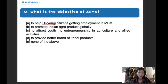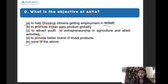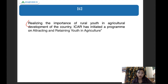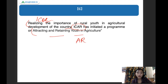What is the objective of ARIA? The right answer is option C: to attract youth to entrepreneurship in agriculture and allied activities. ARIA, which stands for Attracting and Retaining Youth in Agriculture, was initiated by ICAR — the Indian Council of Agricultural Research — which recognized the importance of rural youth in the agricultural development of the country.